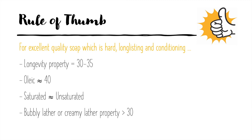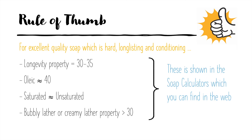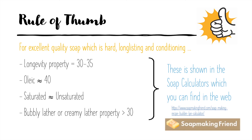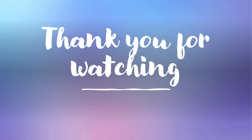And lastly, the bubbly lather or creamy lather property needs to be more than 30. All these numbers are shown when you do your soap recipes in soap calculators, which you can find on the web. The one I use is called Soap Making Friends — here is the link for it. I hope you enjoyed the video and thank you for watching!